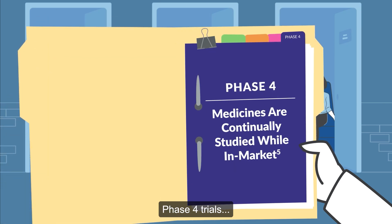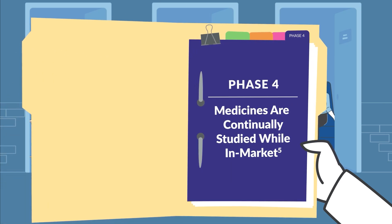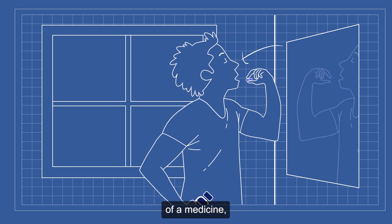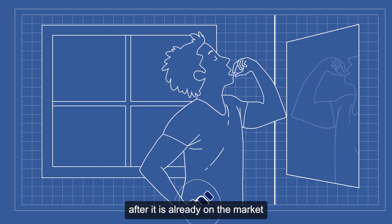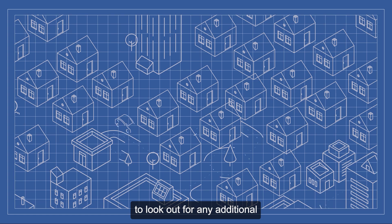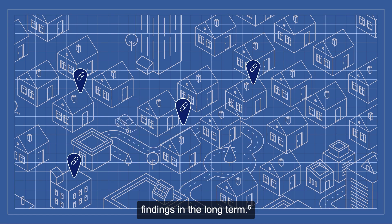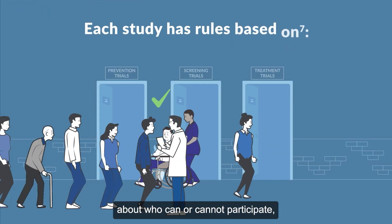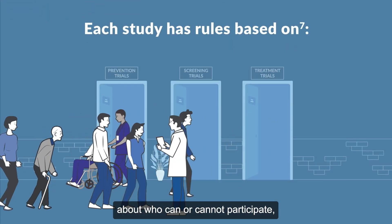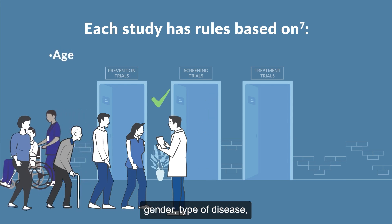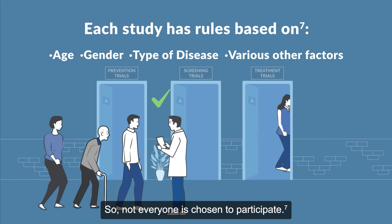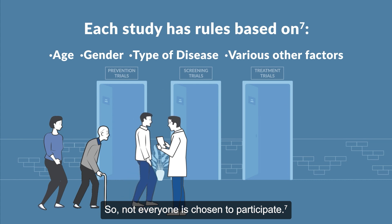Phase four trials are where the efficacy and safety of a medicine continues to be studied after it is already on the market, to look out for any additional findings in the long term. Each study has its own rules about who can or cannot participate based on age, gender, type of disease, and various other factors, so not everyone is chosen to participate.